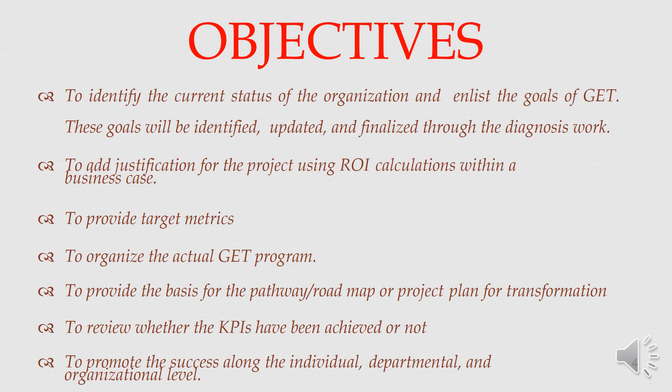The objectives of Green Enterprise Transformation are to identify the current status of the organization and enlist the goals of Green Enterprise Transformation. These goals will be well identified, updated, and finalized through the diagnosis work. This is step one: diagnose the status of the organization. To add justification for the process using return on investment calculation within a business case. To provide the target matrix. To organize the actual GATE program. To provide the basis for the pathway, roadmap, or project plan for the transformation. To review whether the key performance indicators have been achieved or not. To promote the success at the individual, departmental, and organizational level.